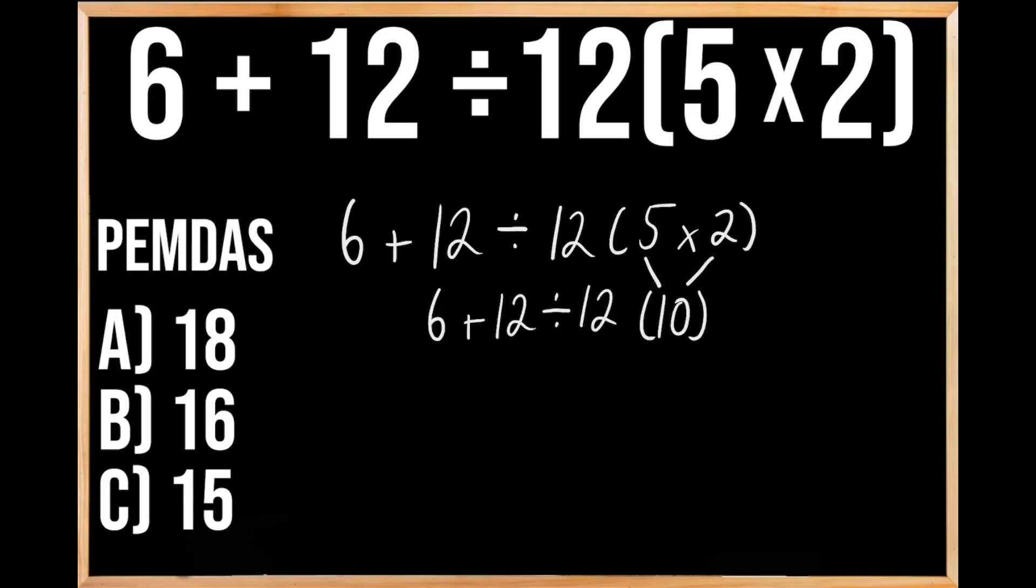Now we move on to our next priority, E, which stands for exponents. We don't have anything left to solve within parentheses and we don't have any exponents in this problem, so we move on to our next priority of multiplying or dividing. When we have a problem that has both multiplication and division, since they're the same priority, we solve from left to right.